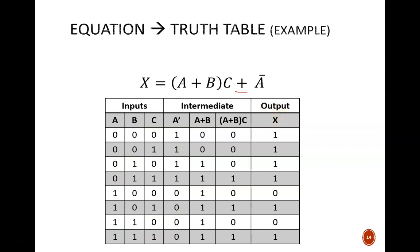Only the final OR operation remains, which will tell us the values for output X. Here there are two big terms being ORed. A' this column, and A or B and C, this column. Again, any time either of these columns is a 1, then the output column is a 1.